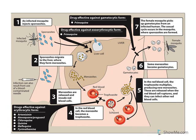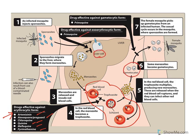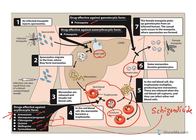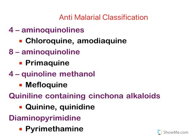Certain drugs are effective against the erythrocytic form — when malaria is present in red blood cells. These include artemisinin, atovaquone-proguanil, chloroquine, quinine, mefloquine, and pyrimethamine. Other drugs are effective against gametocytes and liver forms; these are known as primaquine. Drugs effective against red blood cell forms are known as schizonticides, while primaquine acts as a gametocytocidal agent.